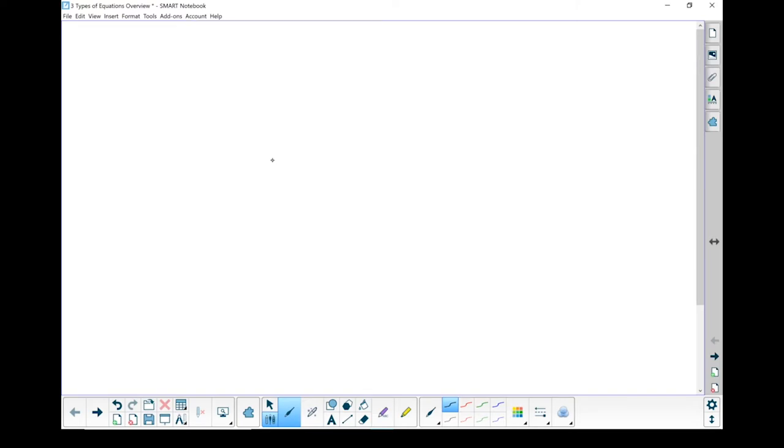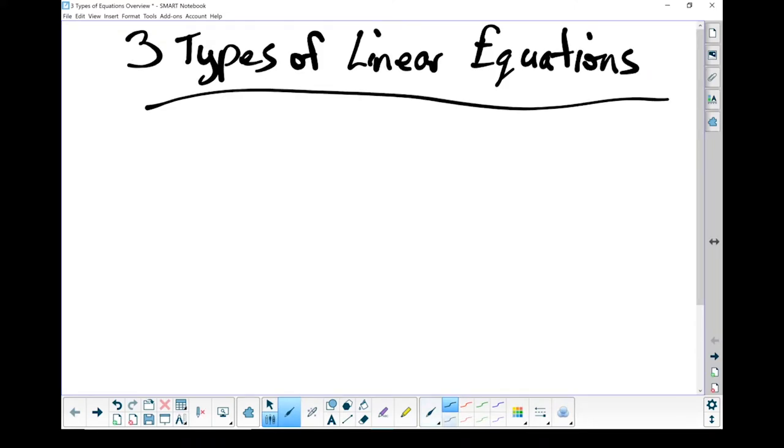Let's do a quick overview of the three different types of linear equations. All right, so the first one we went through was the slope-intercept form. Now it looked like y equals mx plus b.